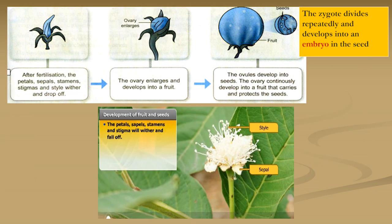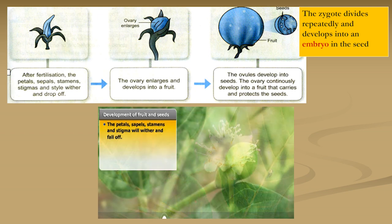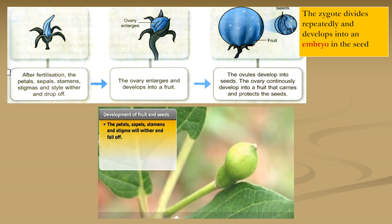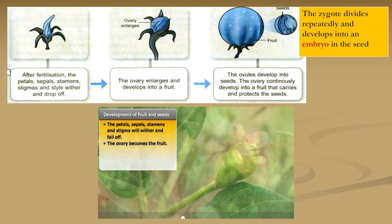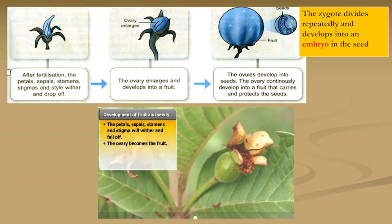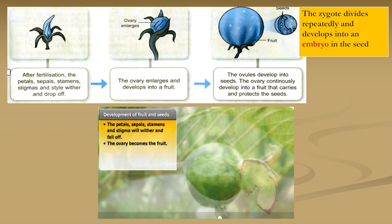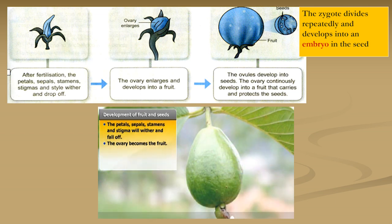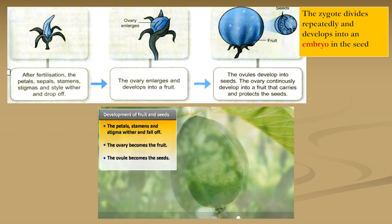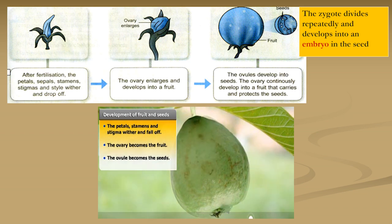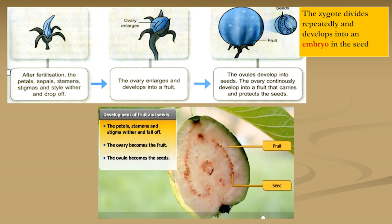After fertilization, the petals, sepals, stamens, stigmas, and style will wither and drop off. The ovary enlarges and develops into a fruit. The ovules develop into seeds. The ovary continuously develops into a fruit that carries and protects the seeds.